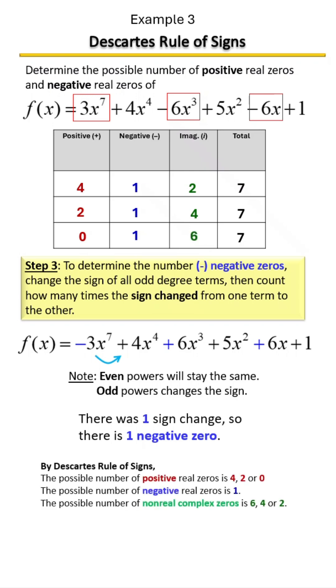So now we can determine by Descartes' Rule of Signs that the possible number of positive zeros is four, two, or zero; one negative zero; and six, four, or two non-real zeros.